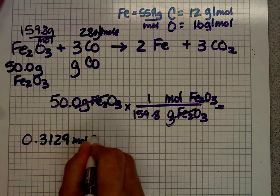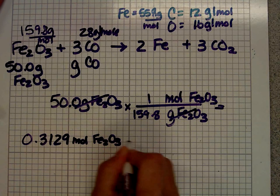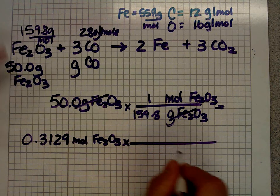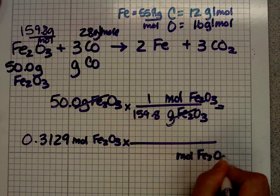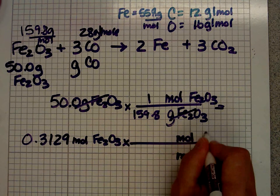That's how many moles of iron oxide we have. But guess what? That's not what I was looking for. I want to get rid of moles of iron oxide. And I want to be left with moles of CO, carbon monoxide.